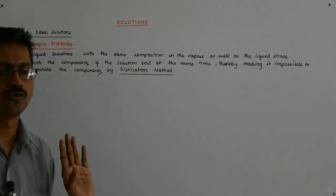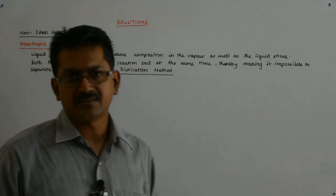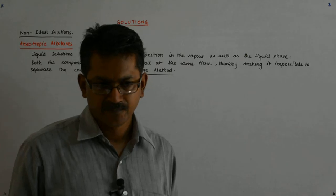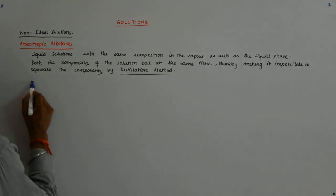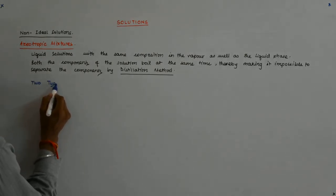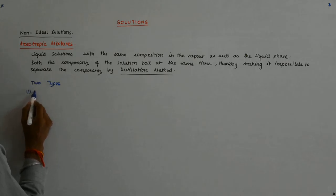When you boil it, you have the same composition throughout. Otherwise, what used to happen — suppose ethanol and water — ethanol used to evaporate first and water used to follow. That was one of the ways taught to us to separate these components, but we are not able to do that in azeotropes.